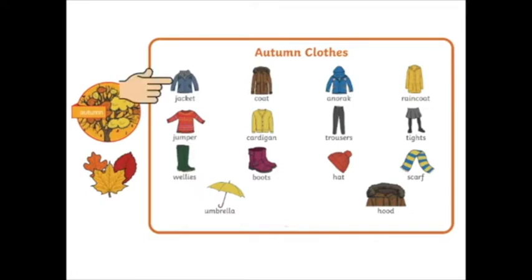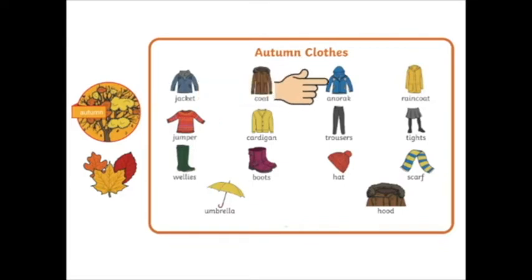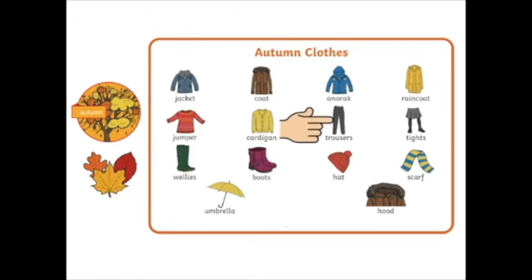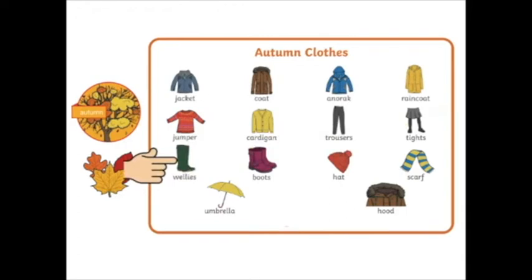Jacket. Coat — a coat is like a long jacket, a big jacket. Anorak — an anorak is for when it's raining. Raincoat. Jumper. Cardigan — a cardigan is like a jumper with buttons. Trousers. Tights. Wellies — these are boots for when it's raining.